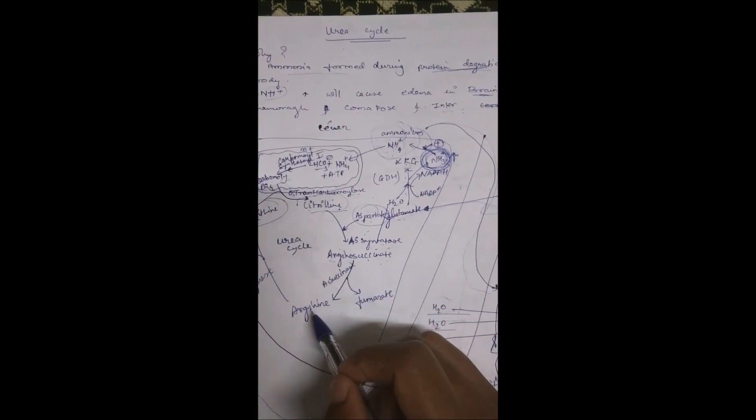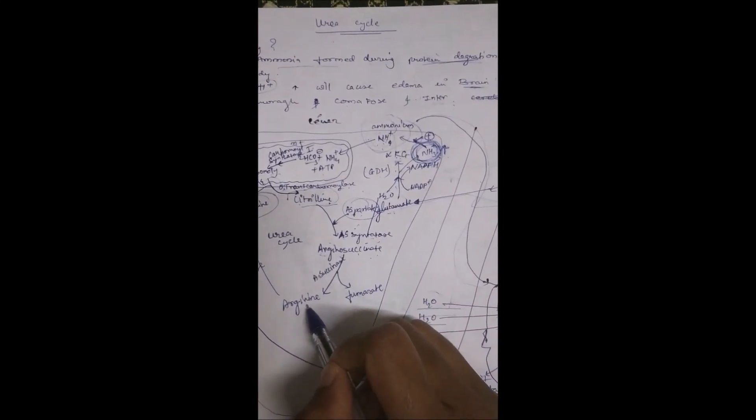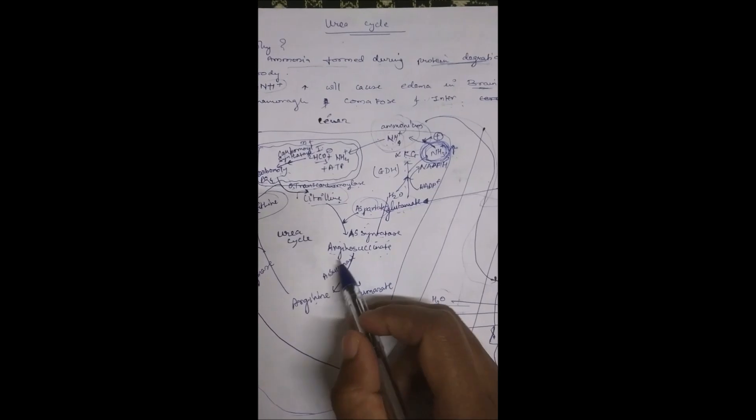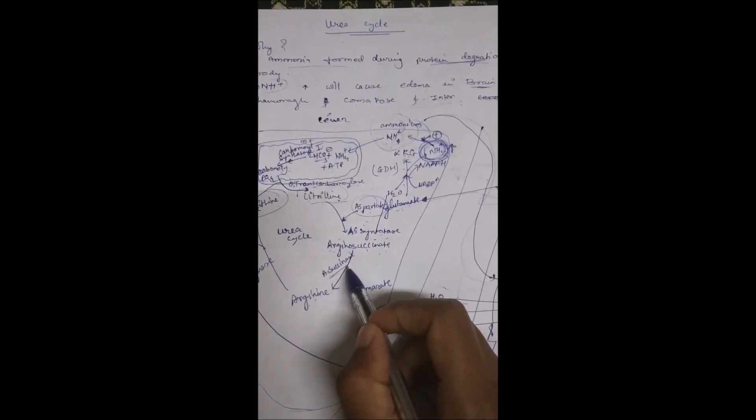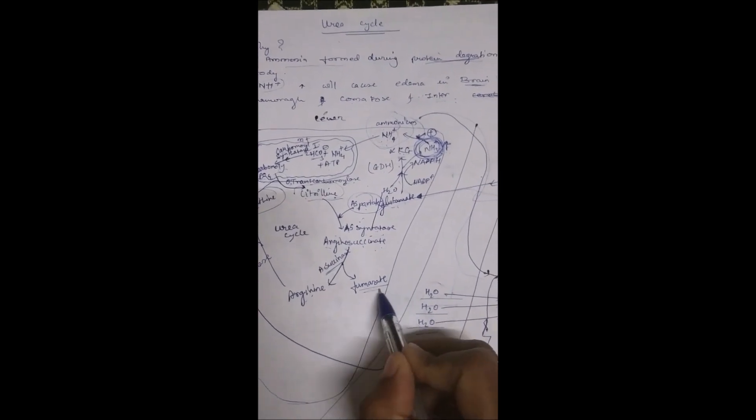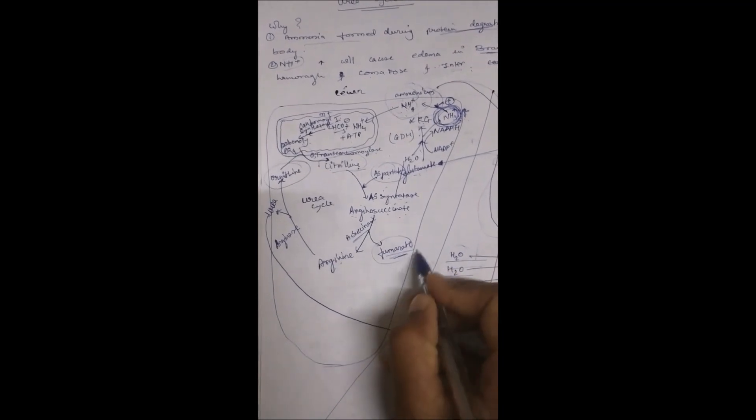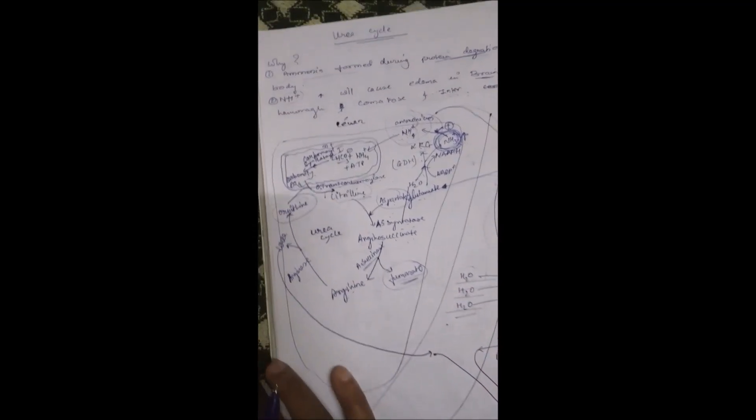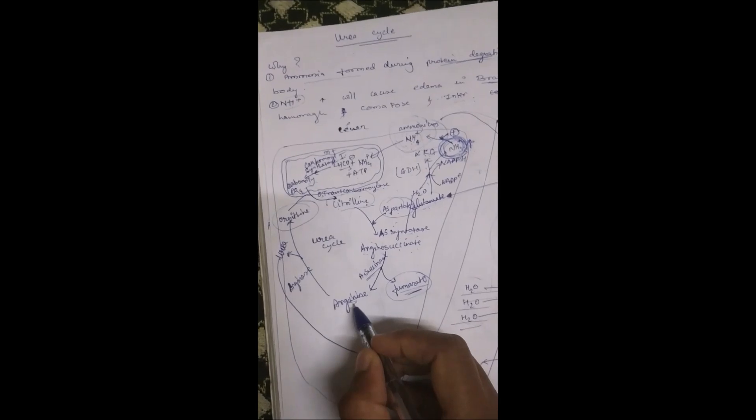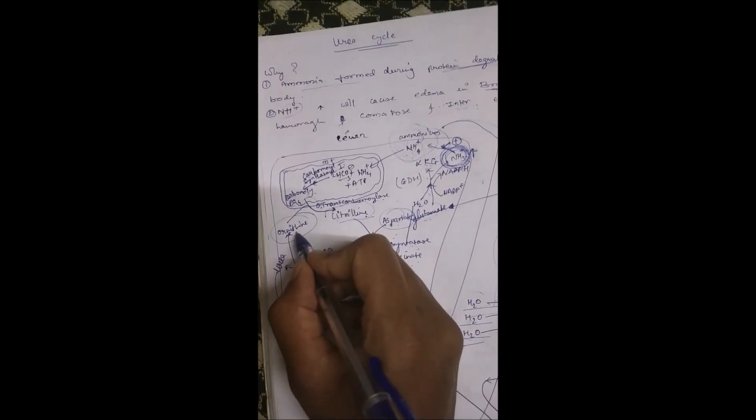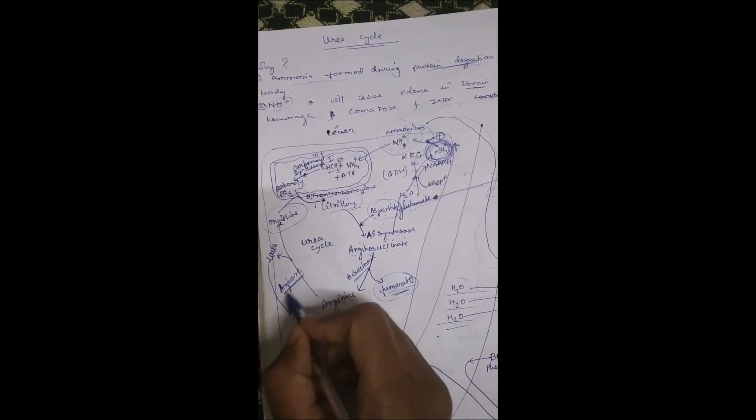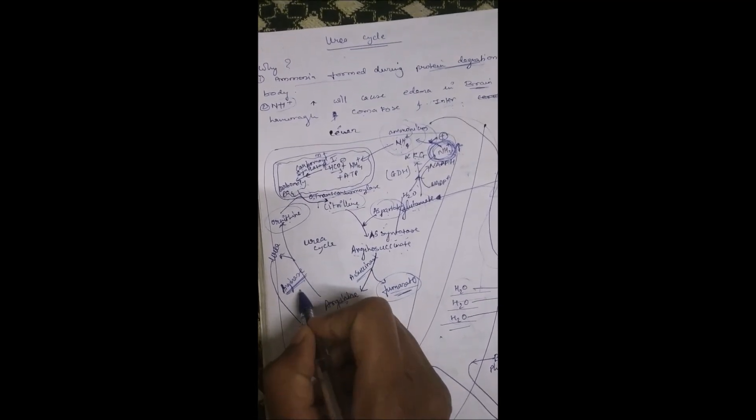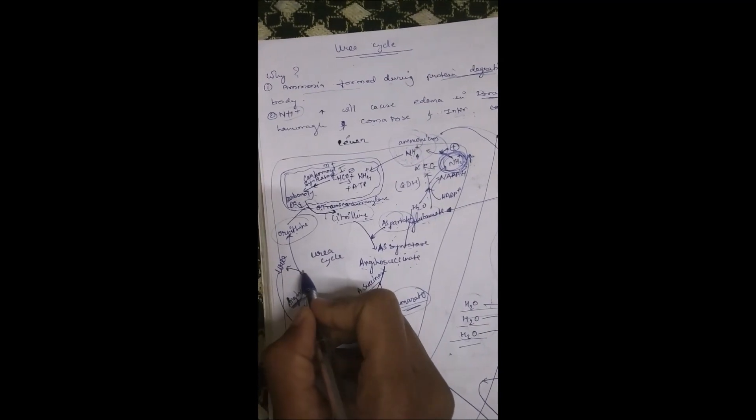This argininosuccinate will then form into arginine using argininosuccinate lyase enzyme, and a byproduct fumarate is formed. This fumarate can be used for another cycle in the cell. This arginine will get converted again into ornithine by using arginase enzyme, and a byproduct called urea is produced.